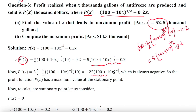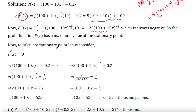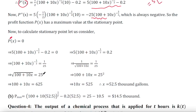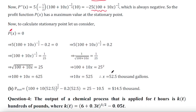This is the first derivative, and you can also calculate the second derivative. To find the stationary point, set P prime equal to zero and solve for x. If you put that x value into the given profit function, you will get the maximum profit, which is $14.50.